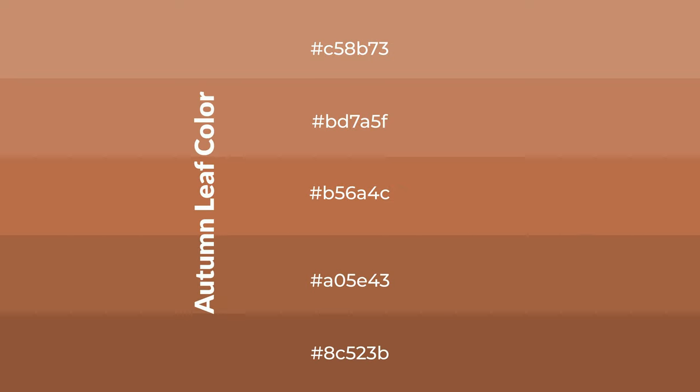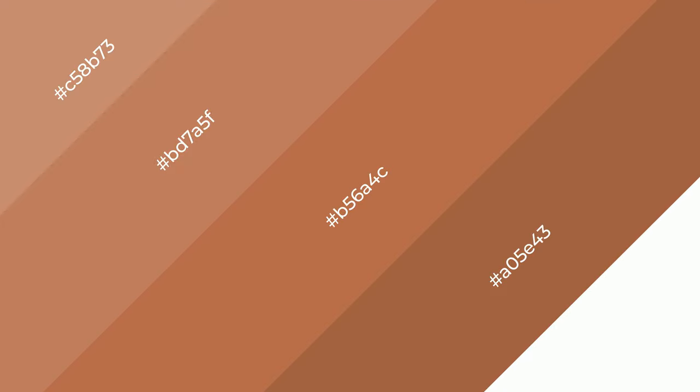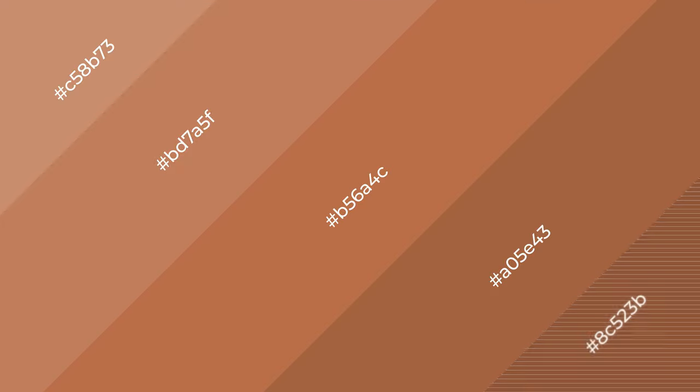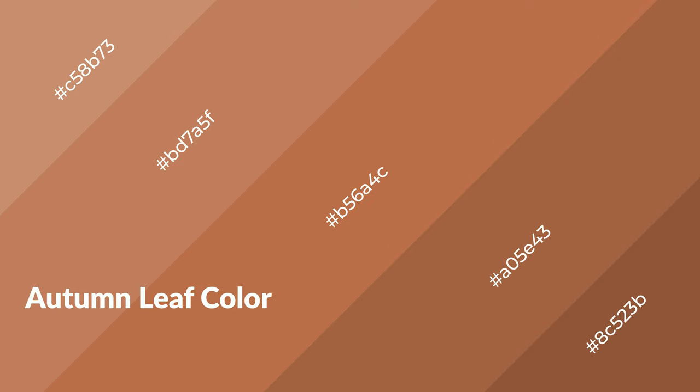To generate shades of a color, we add black to the color, and it is used in patterns, 3D effects, and layers. Shades create depth and drama. Autumn leaf is a warm color and it emits cozier and active emotion.